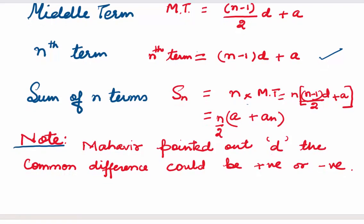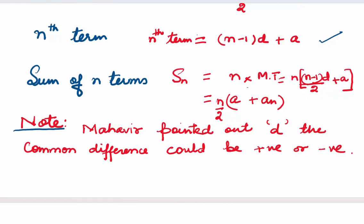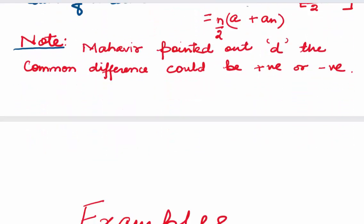It was Mahavira the mathematician who first pointed out that the common difference d can always have a negative value also — that is, it has both positive and negative values. Let's come to some examples.